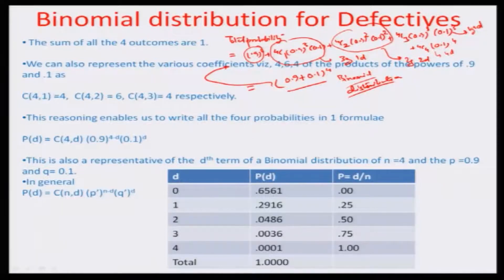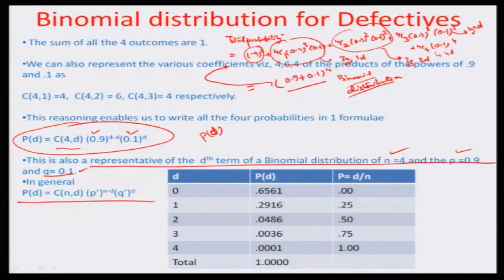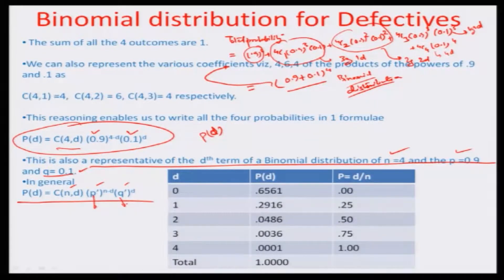In general, a generic term for representing D defectives is P(D) = C(N,D) × p' to the power of (N minus D) times q' to the power of D, where p' is the probability of having a defective sample (D/N) and q' equals 1 minus p', the probability of having a good sample. This is the D-th term of the binomial distribution with N equal to 4, p equal to 0.9, and q equal to 0.1. This is how the binomial distribution represents the acceptance sampling mode and estimates the number of defects in a particular sample.